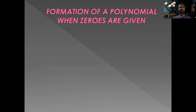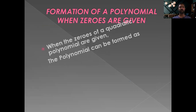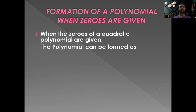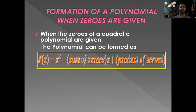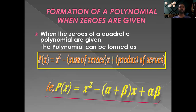Now, how do we form a polynomial when its zeros are given? When the zeros of a quadratic polynomial are given, the polynomial can be formed using the formula: P(x) equals x square minus (sum of zeros) times x plus (product of zeros), or in symbols, P(x) equals x square minus (alpha plus beta)x plus alpha times beta.